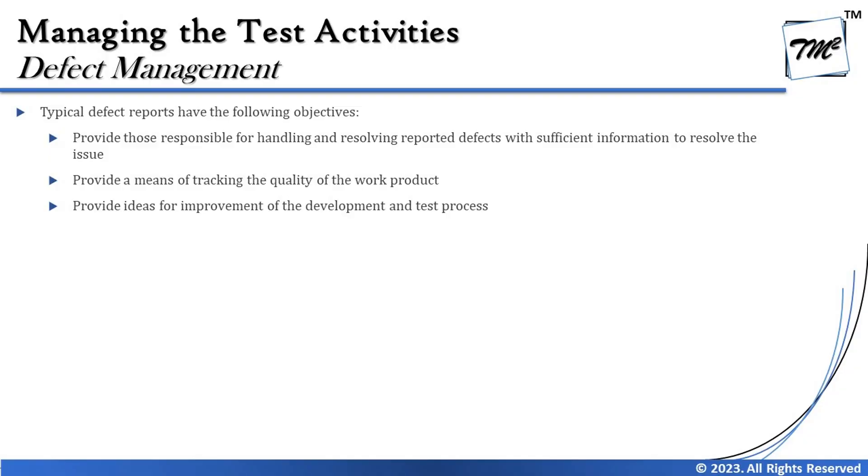Let's look into the objectives involved in writing a defect report. The first objective is to provide those responsible for handling and resolving reported defects with sufficient information to resolve the issue. When a test case fails, it's only the tester who knows what went wrong. Until this person writes a report, nobody else can understand the defect — verbal communication is not recommended, as there are many stakeholders who need the defect information to make decisions or take resolution actions. Documenting it is therefore very important.